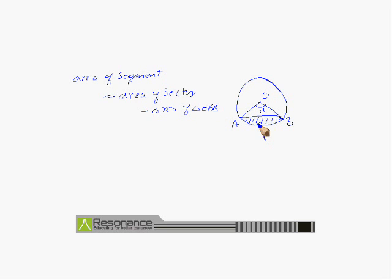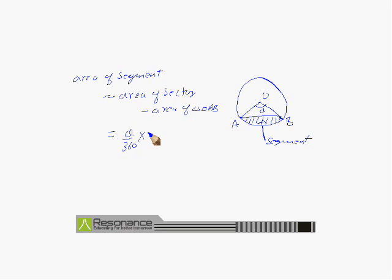The area of the segment is equal to the area of the sector minus the area of triangle OAB. This region is called the segment. We can find the area of this segment by subtracting the area of the triangle from the area of the sector, where the area of the sector is theta upon 360 into pi r squared minus the area of triangle OAB.